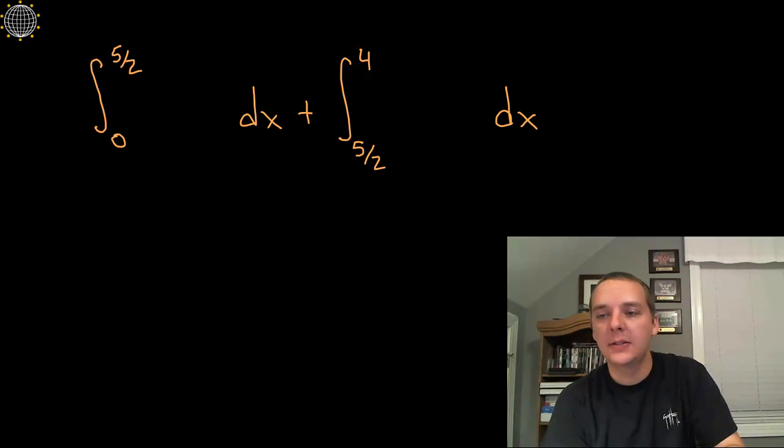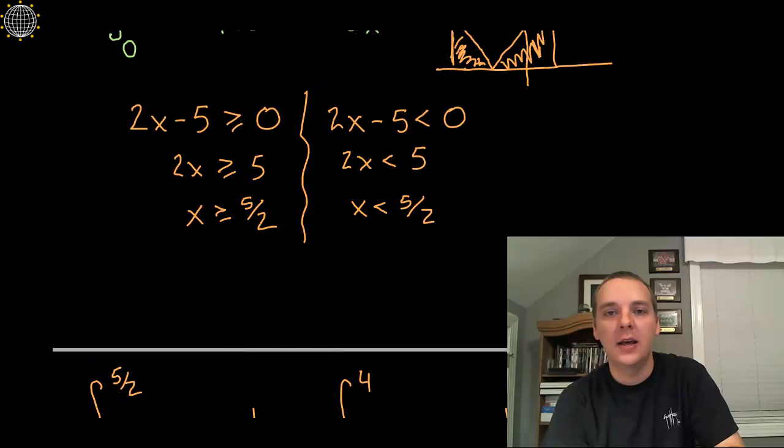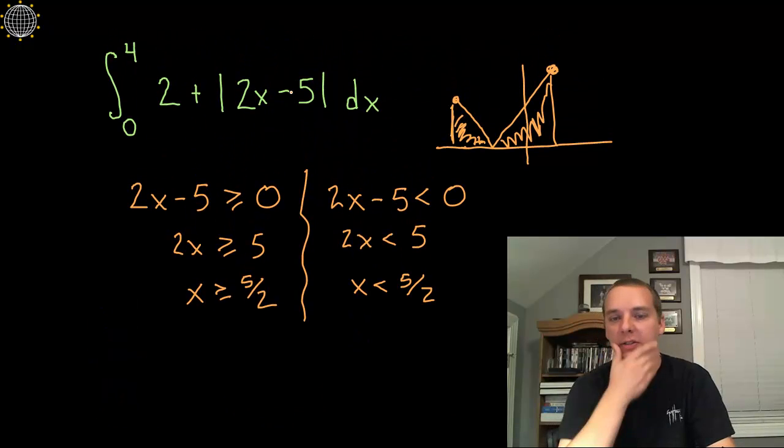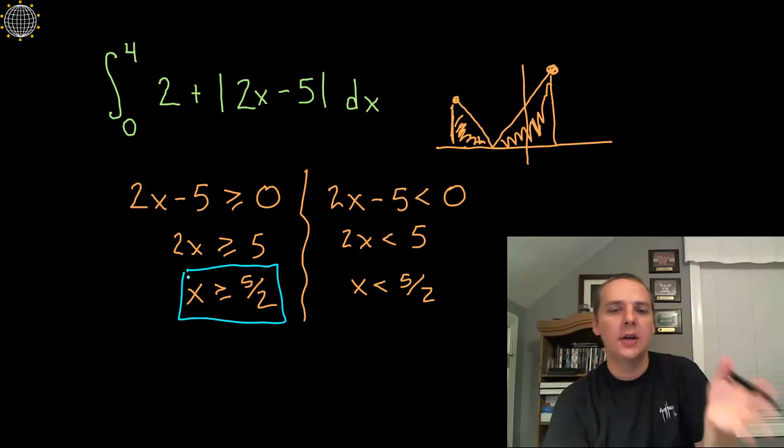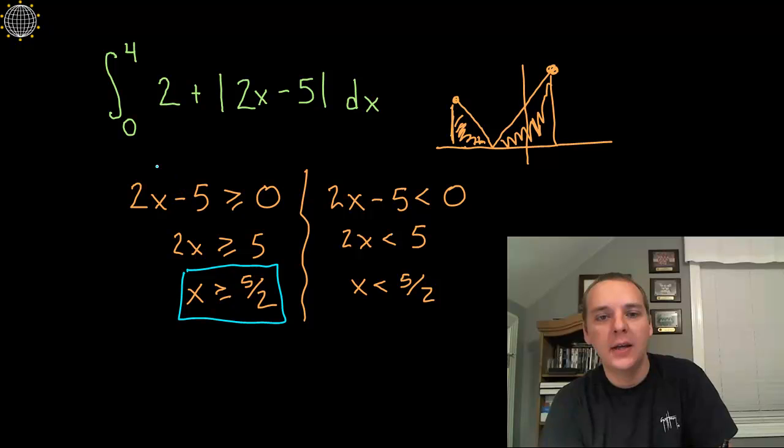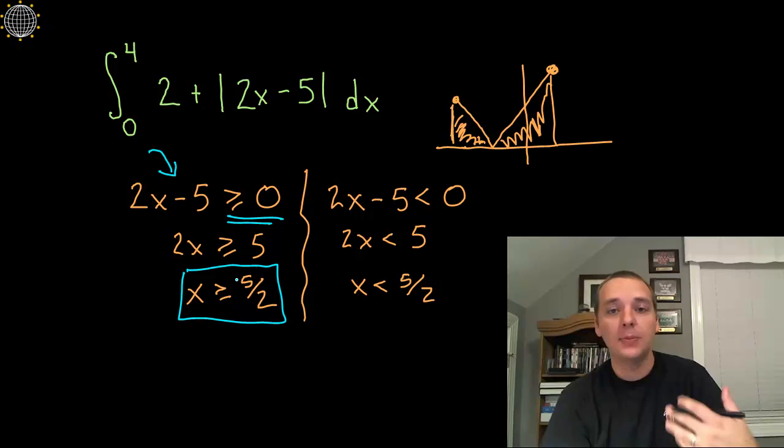Now I can make sense of why I didn't just set that term inside the absolute values to 0. See, for the x's greater than 5 halves, right here for any x's past 2.5, then this term right here is already positive, right? So the absolute value of something that's already positive will just stay positive.